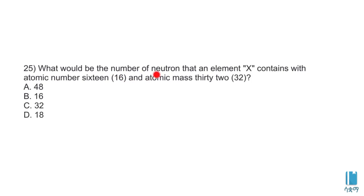What would be the number of neutrons that an element X contains with atomic number 16 and atomic mass 32? The element X has atomic number and atomic mass. The number of neutrons is calculated as mass number minus atomic number.